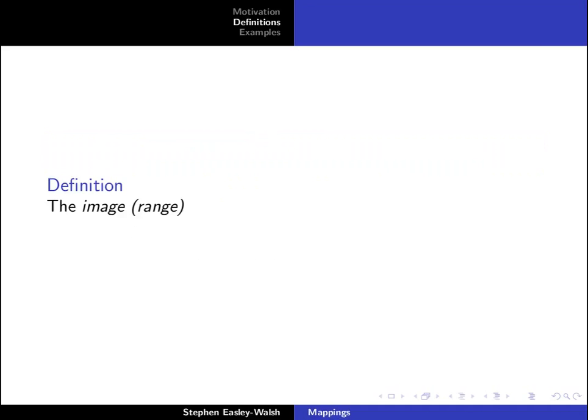The image or range of a function f is the set of all values returned by f. So in other words the range is all possible y values.